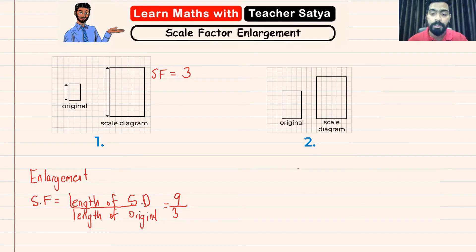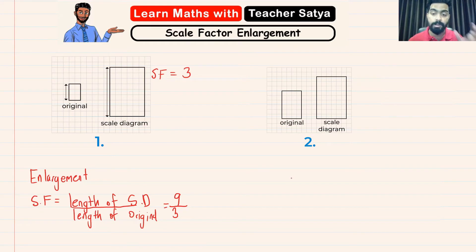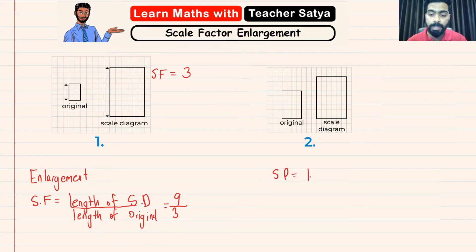Now let's go to question number two. As we can see, the scale diagram is bigger than its original picture, so we know that it is an enlargement. In order to find the scale factor, we again use: scale factor equals the length of the scale diagram over the length of the original.